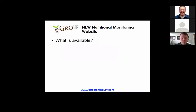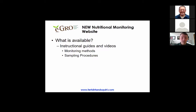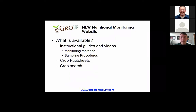So what is available? There are currently instructional guides and videos for different monitoring methods and sampling procedures. We have crop-specific fact sheets that outline pH and EC values of these crops, optimal fertility rates, and also photos. We do have a searchable crop database that you will be able to search by common or scientific name. It will provide the optimal fertility rate, recommended pH values, and EC values reported by pour through, SME, or one-to-two dilution.